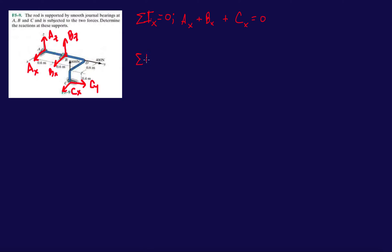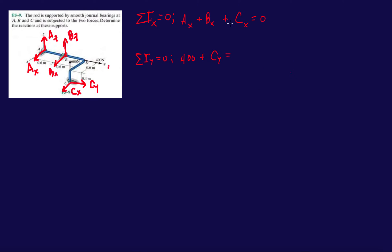The next step is to find forces in the Y direction. We have a positive 400 newtons, then plus CY equals zero. So right away we can find the reaction force in the CY direction: CY equals negative 400 newtons.